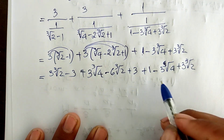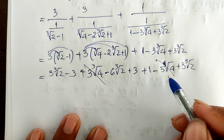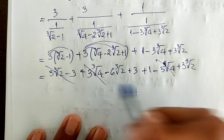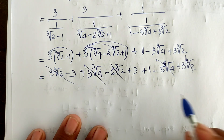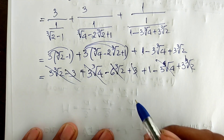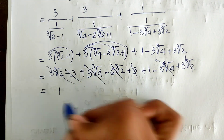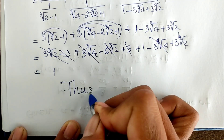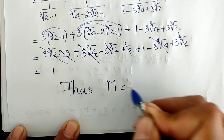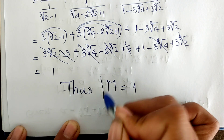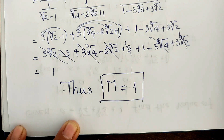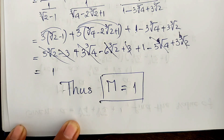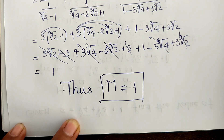Now we can cancel the like terms: the cube root of 2 terms cancel, the cube root of 4 terms cancel, and the constant terms simplify. So M equals 1. That is our answer. Thank you for watching — if you like my videos, please don't forget to subscribe to my channel for more exciting videos. Goodbye!